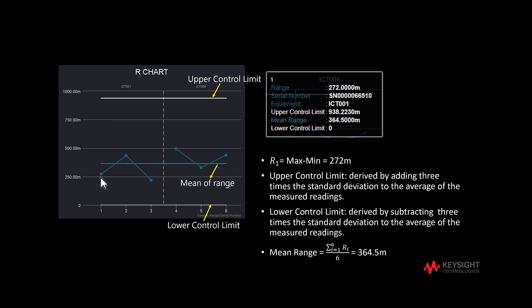The same part is measured and three different measurements are taken using the same measurement system. We see that the consistency of ICT004 is better than ICT001, as the variance among R4, R5, and R6 are closer to the average, which is 500 mils.